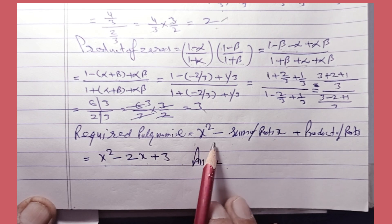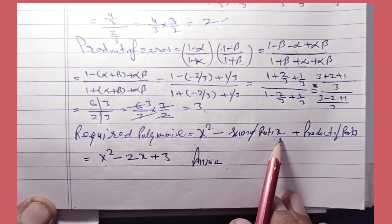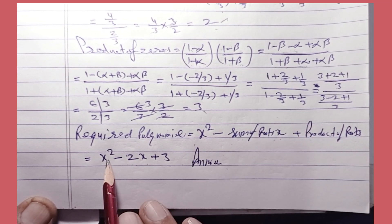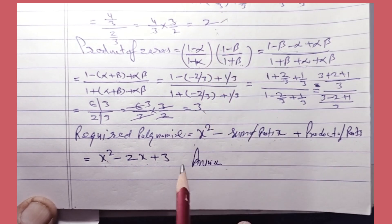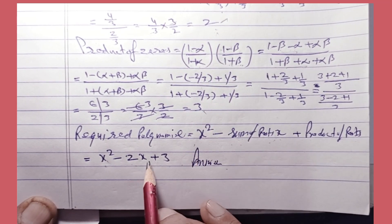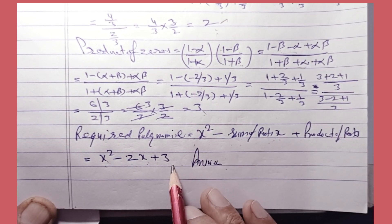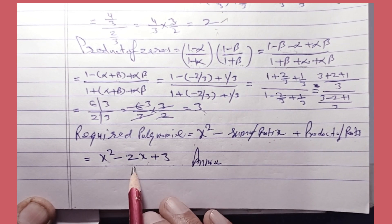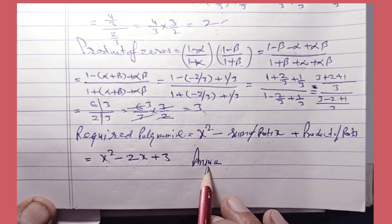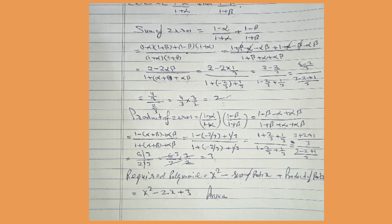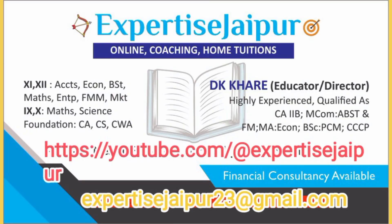If you have a quadratic polynomial, it is x² - (sum of roots)x + (product of roots). The sum of roots is 2, so we have -2x; the product of roots is 3. So the answer is x² - 2x + 3. Please like, subscribe and share my channel Expertise Jaipur, and hit the bell icon for new videos.